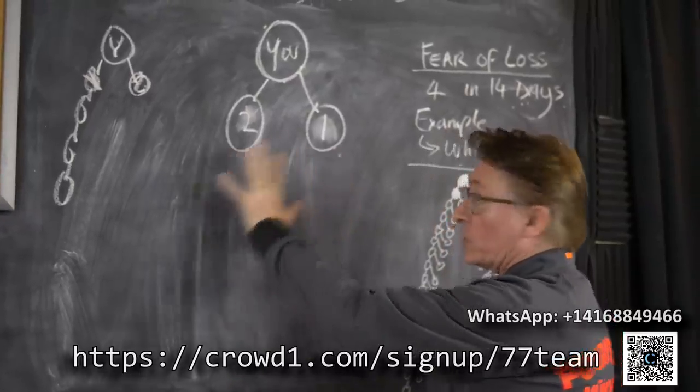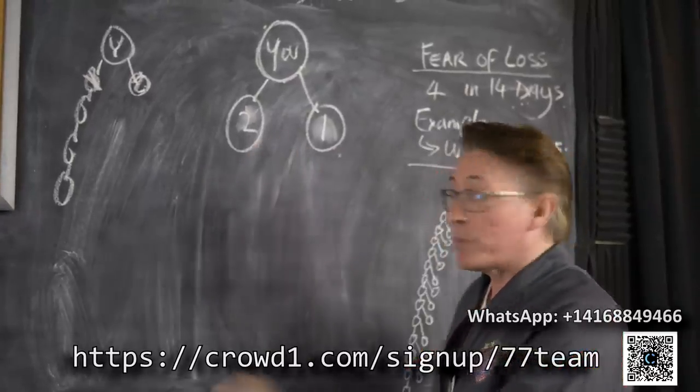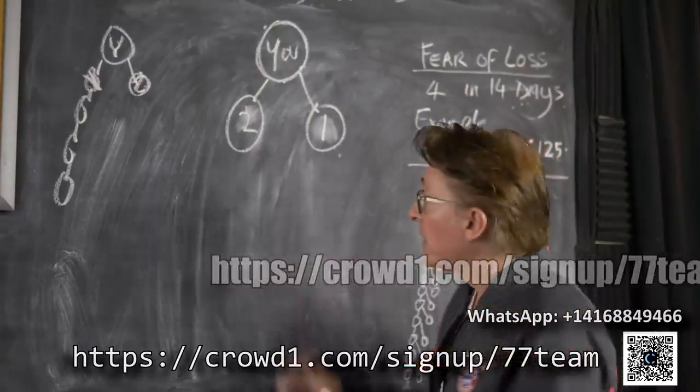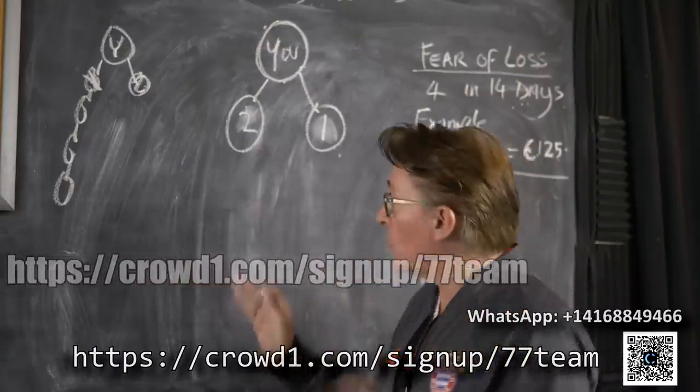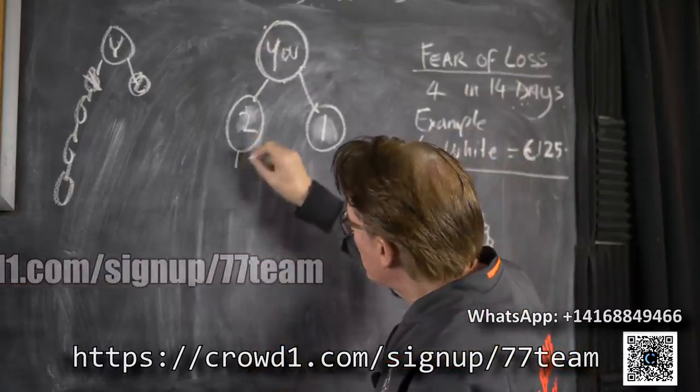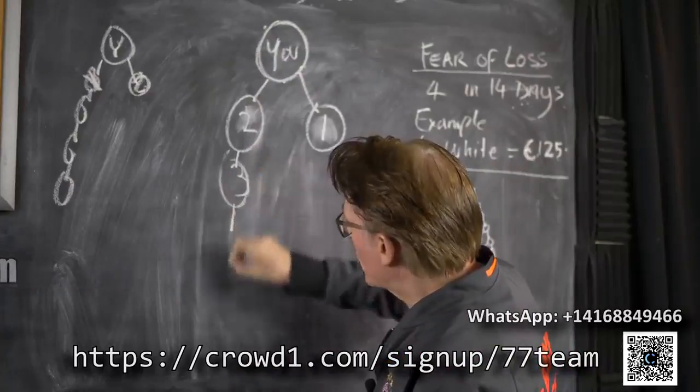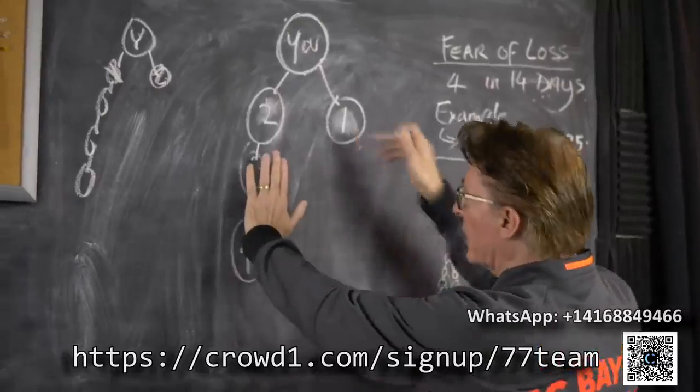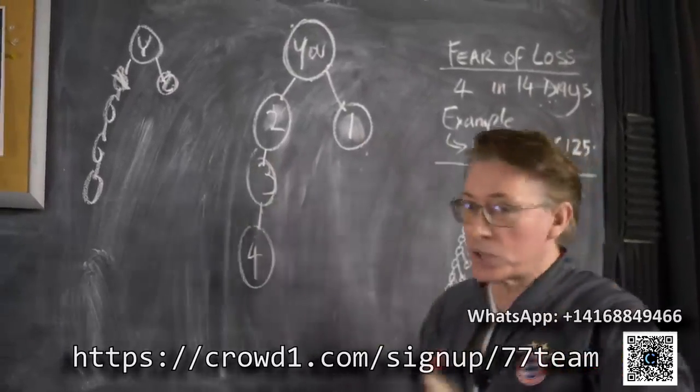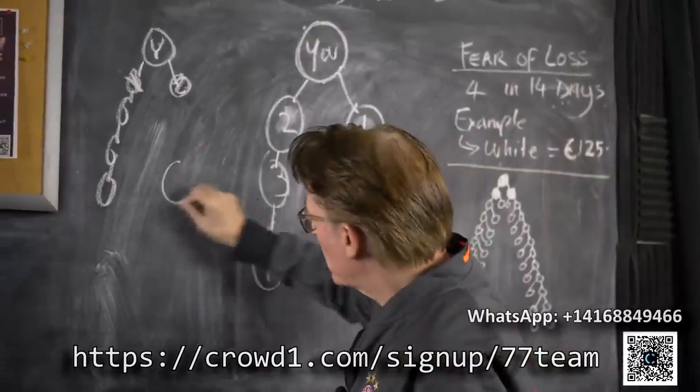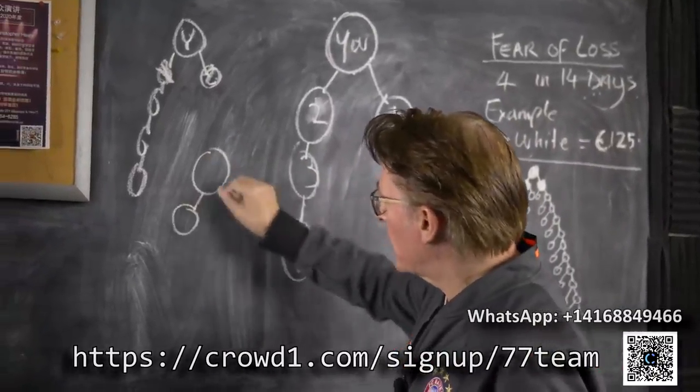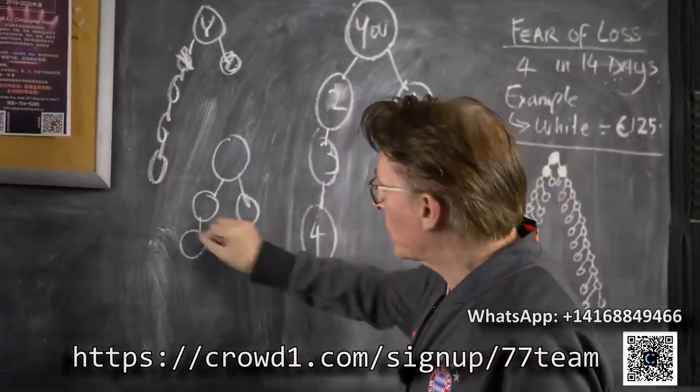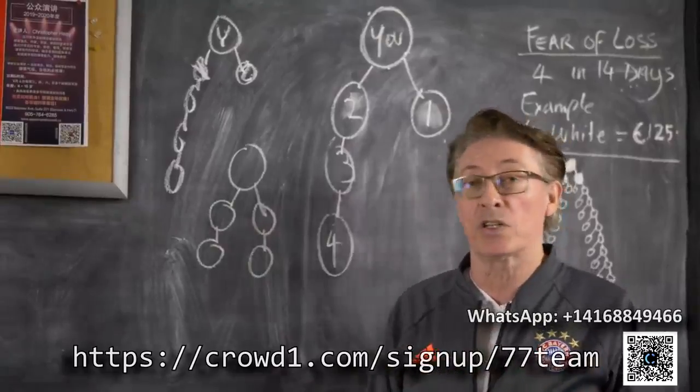Once you've done that, you want to bring on the next two people. You can either put them here, number three and number four, or you put them here, number three, number four. You don't do this: Here's me, I bring in one, I bring in two, that's the activation, and then I bring in three and then I bring in four. That's not what you want to do.